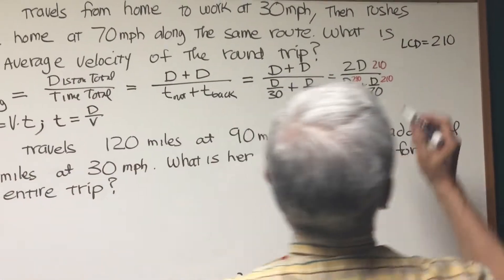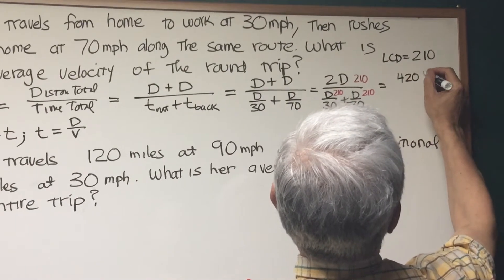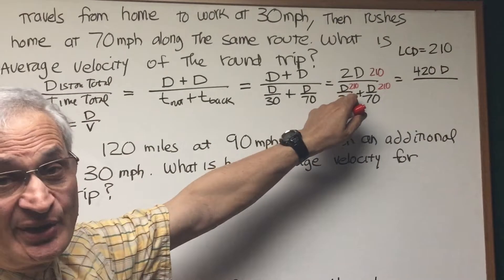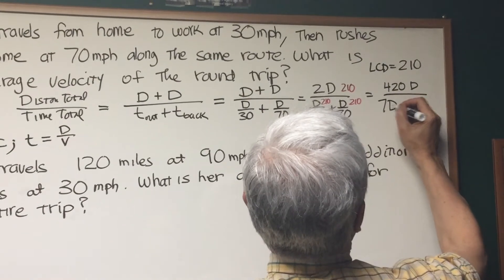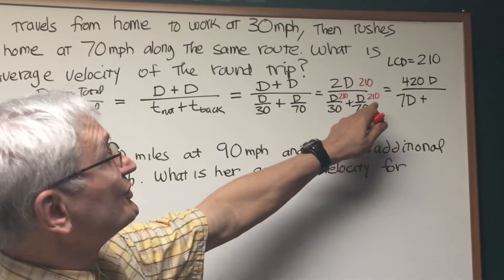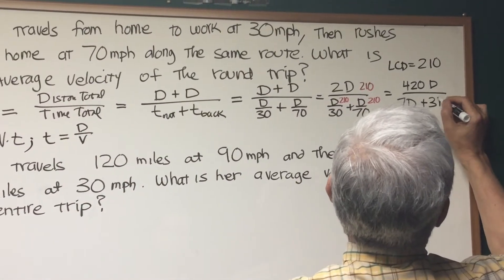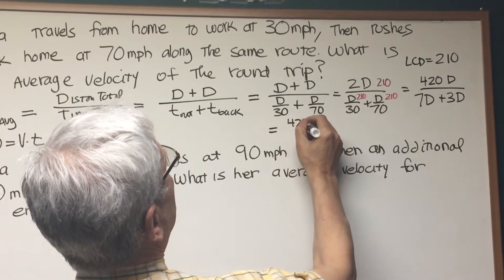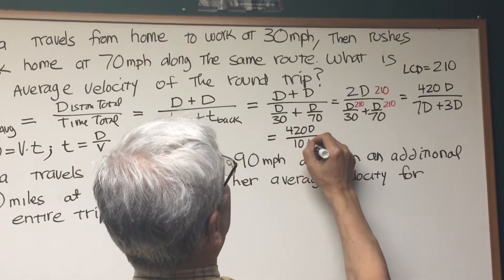In the numerator, that will give us 420D, and in the denominator, 30 goes into 210 seven times, so this is 7D, and 70 goes into 210 three times, that gives us 3D. So the fraction is then equal to 420D over 7D plus 3D is 10D.